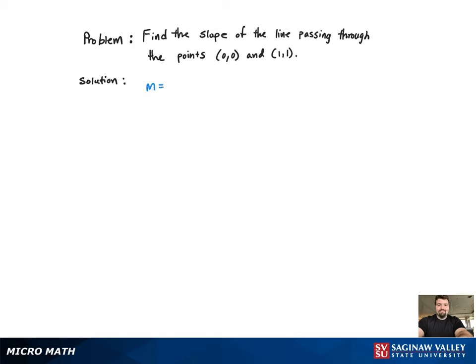To find the slope, we first have to have the equation: m equals y2 minus y1 over x2 minus x1. Now we just have to plug it in — we arbitrarily pick which point is going to be (x1, y1) and which one is going to be (x2, y2).